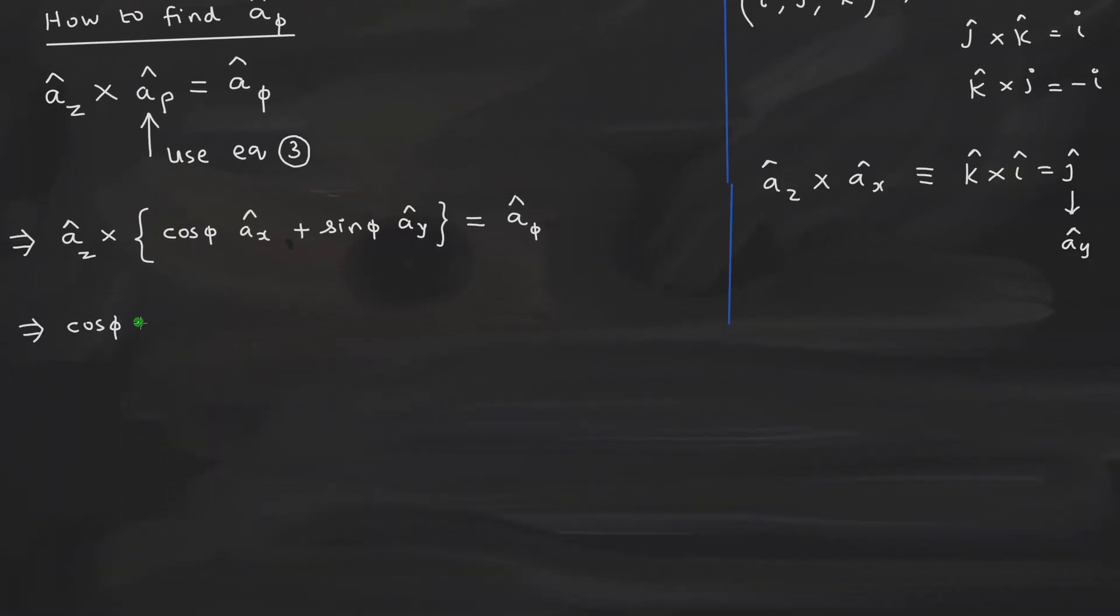Therefore, let us keep this as ay here. Then you have plus sine phi into z cross y i vector. i vector is ax. Because ijk, if you are familiar, i will be equal to ax. On the right hand side, it is the same thing. We are going to get a phi.